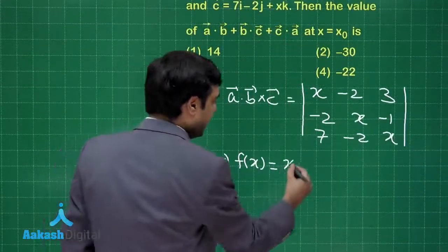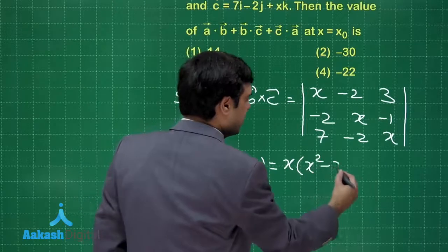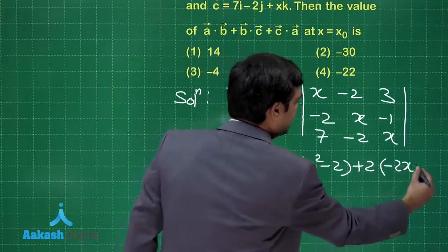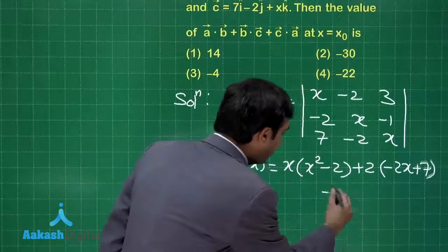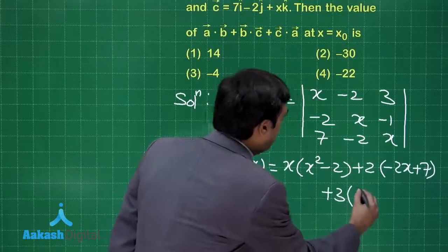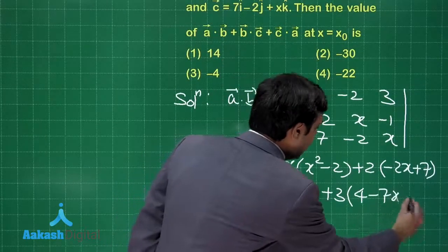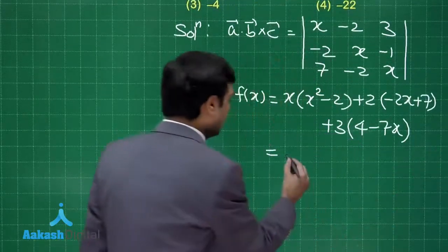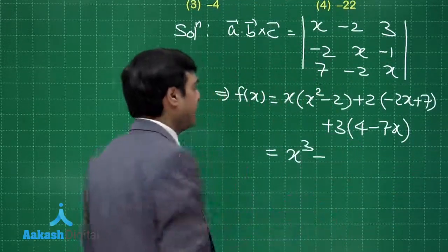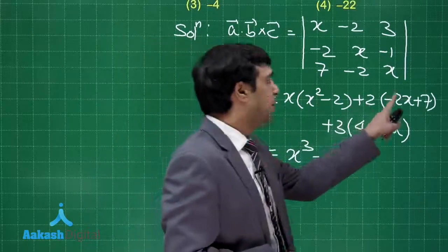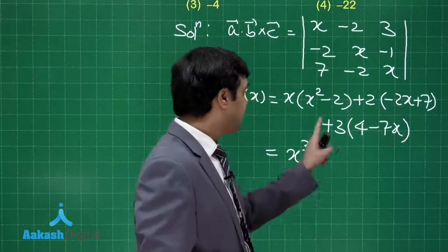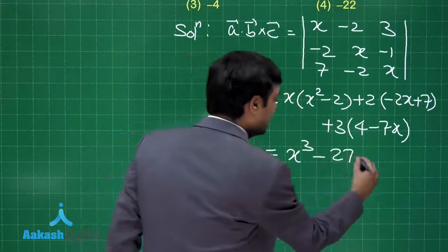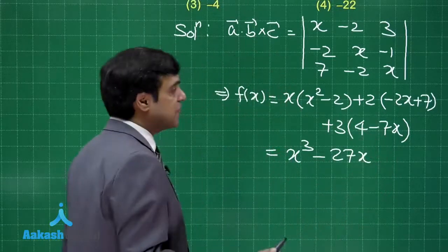Simplifying it we get x multiplied with x squared minus 2, plus 2 multiplied with minus 2x plus 7, plus 3 into 4 minus 7x. Now we can see that it is changing to x cubed, next minus 2 minus 4, that is minus 6, then minus 21 giving you minus 27x, and the constant term we can see 14 plus 12 is 26.